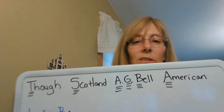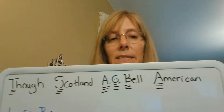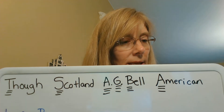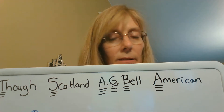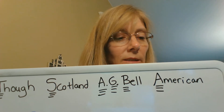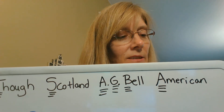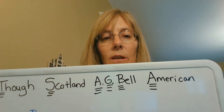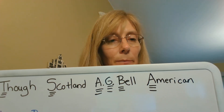The capitalization sentence is all review and practice: 'Though born in Scotland, A.G. Bell, who invented the telephone in 1876, is considered an American inventor.' The first word 'Though' is capitalized. Scotland is a country — capitalized. A.G. Bell is a person's name, so A, G, and B are all capitalized. And the A in American is also capitalized.